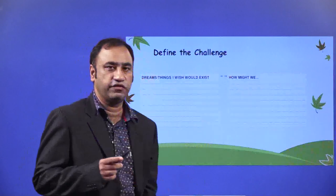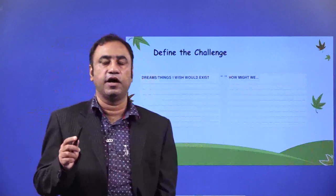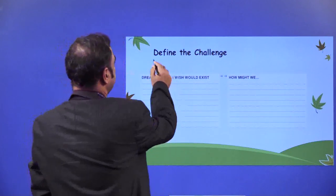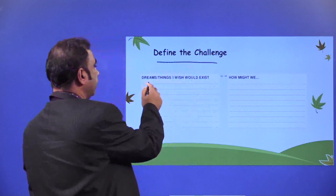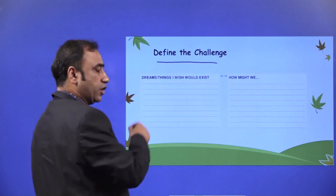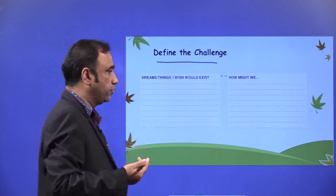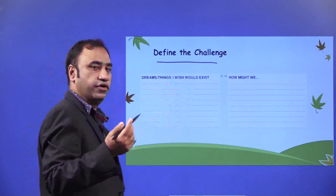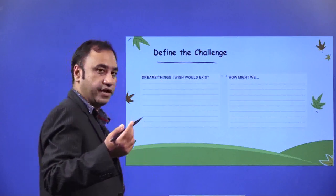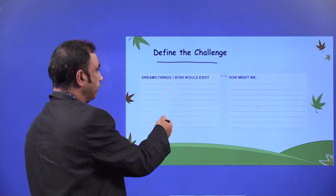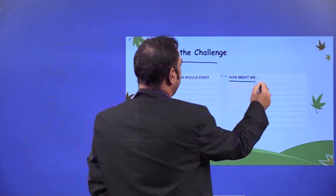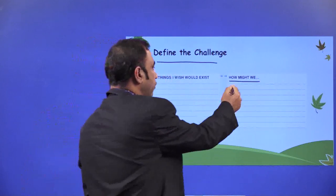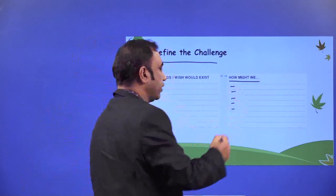This is a template which I have created for all of you to apply our Design Thinking Challenge process. So first, define the challenge. You have to define what you want to work upon. What is the challenge you want to work upon? You have to list down dreams — things or products you want to make — and then mention how might we be able to do it. List down all those points on how you are going to make your product.